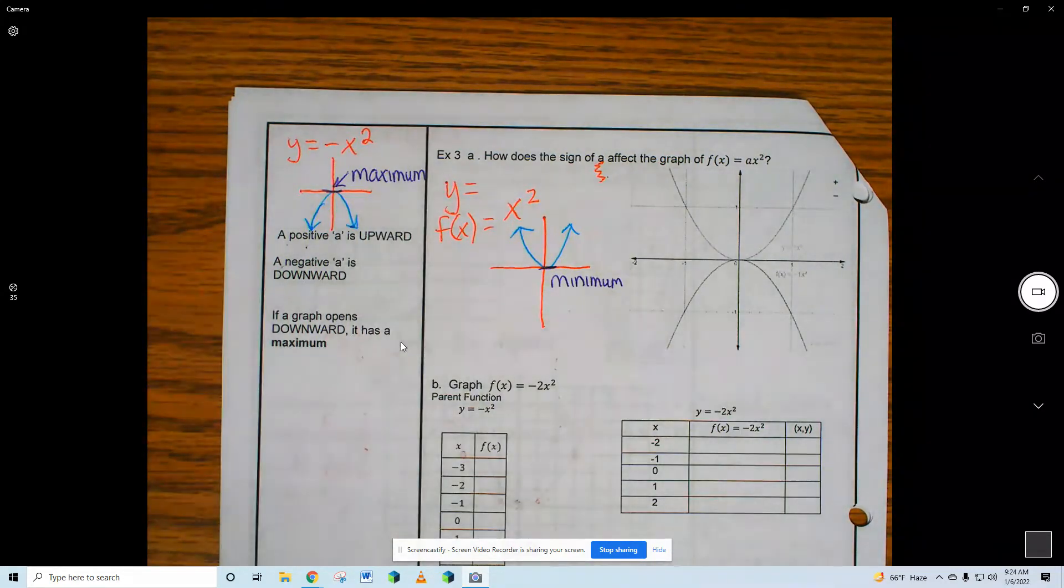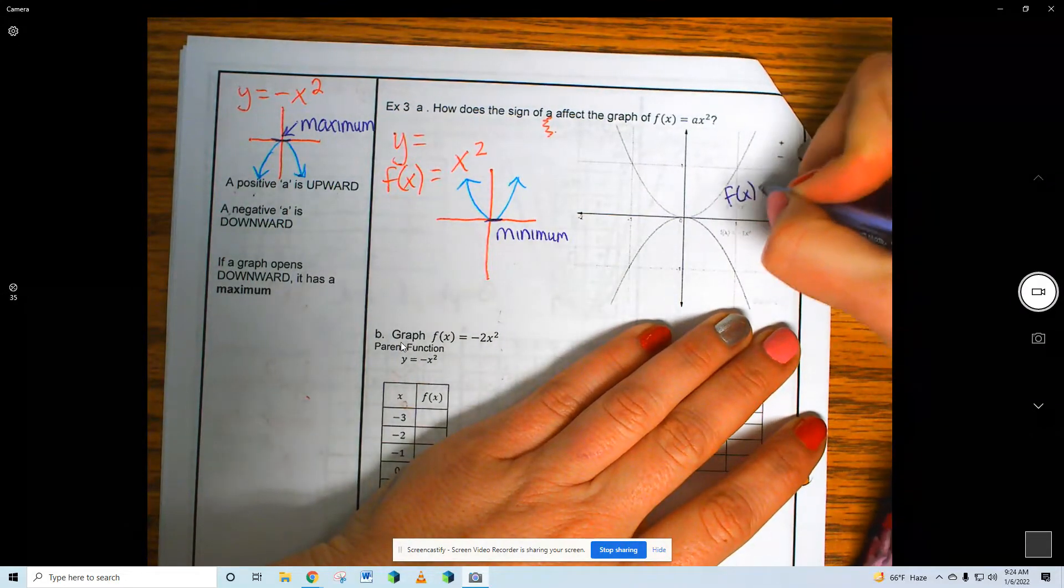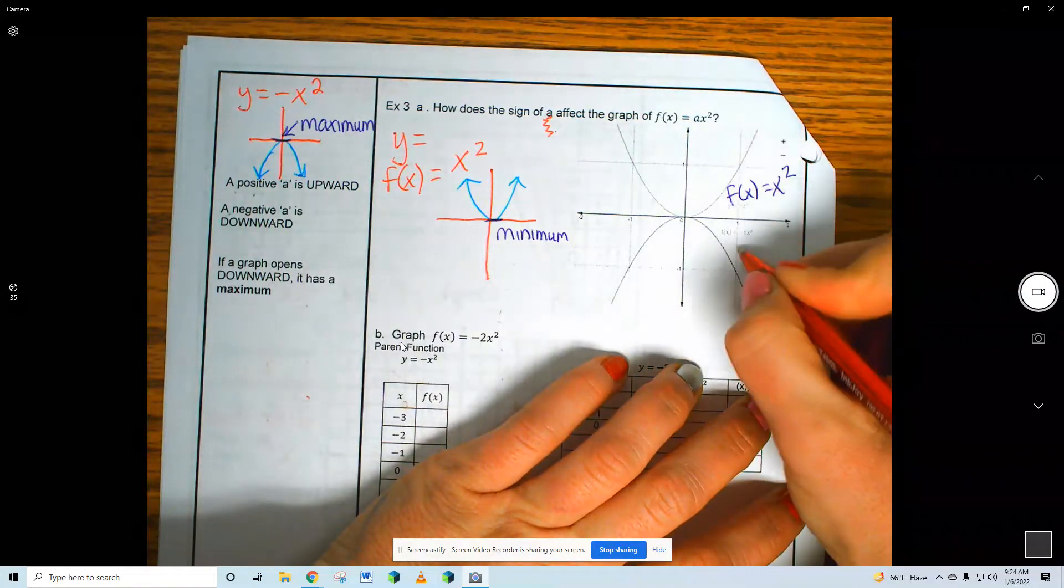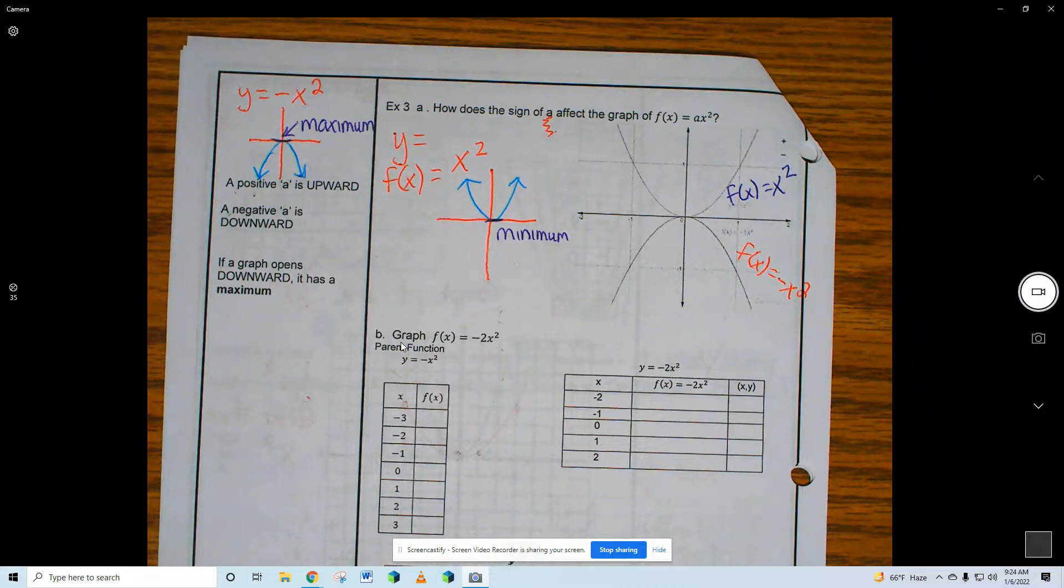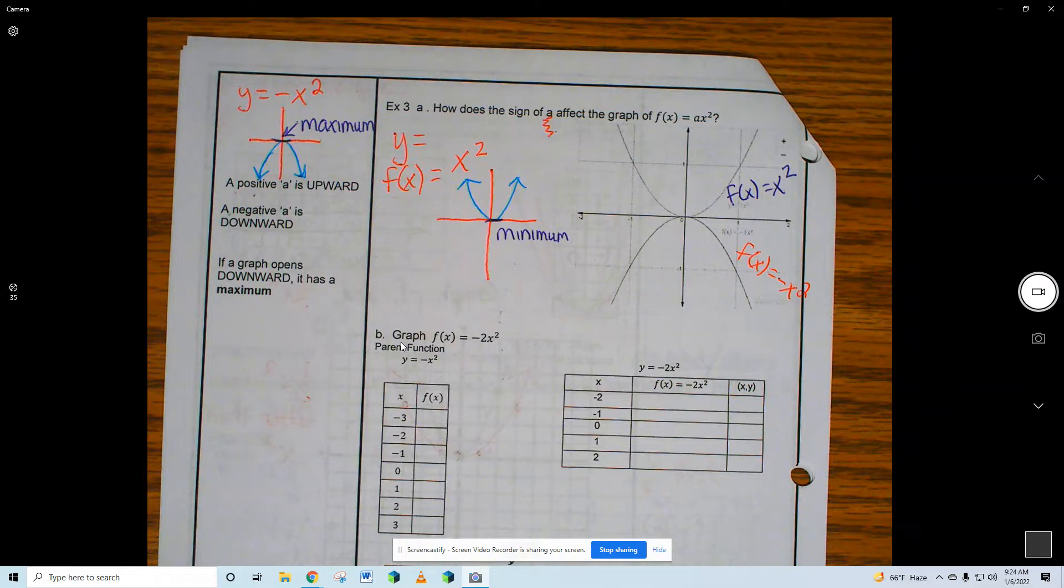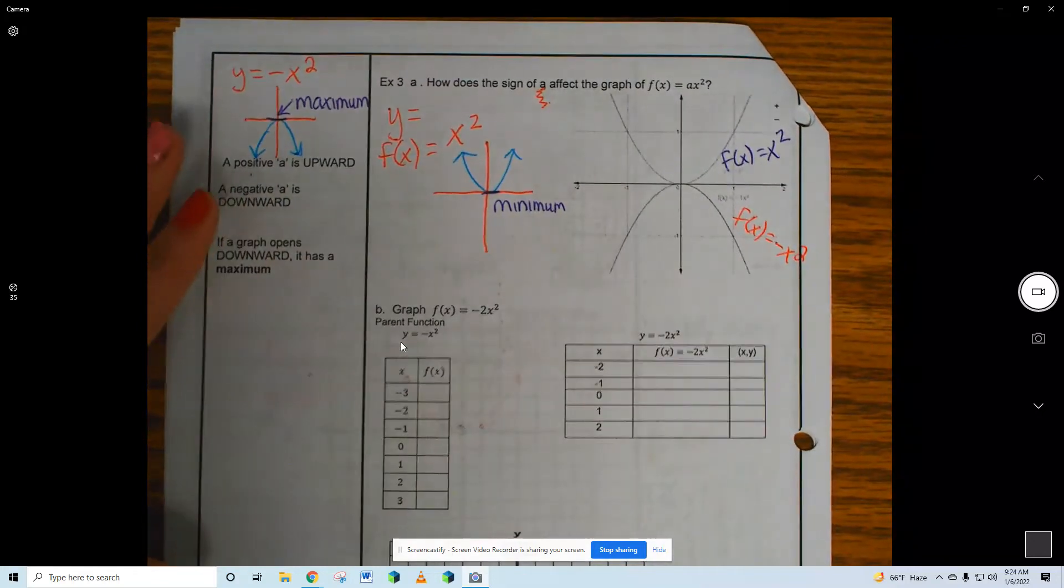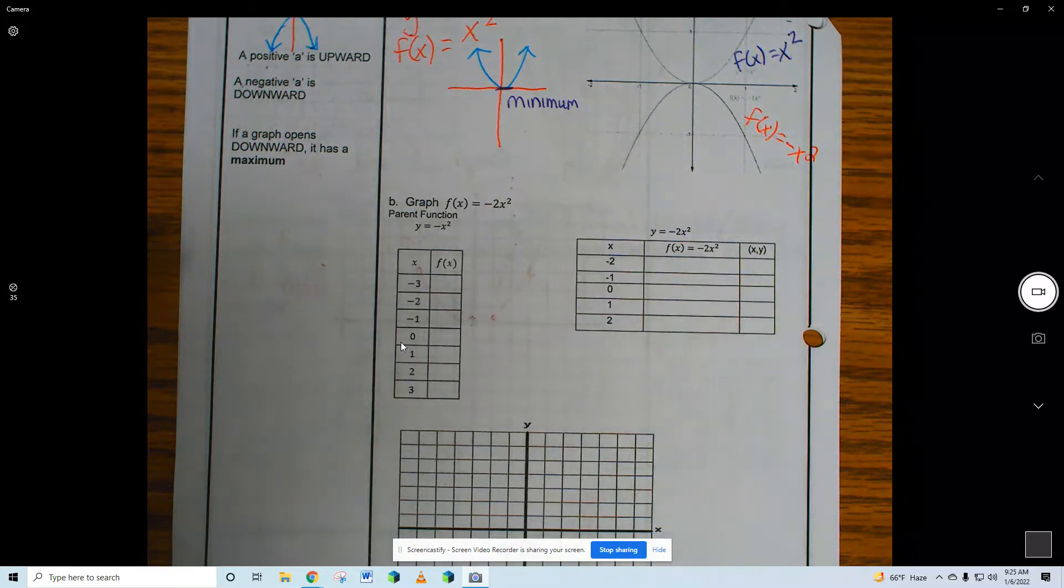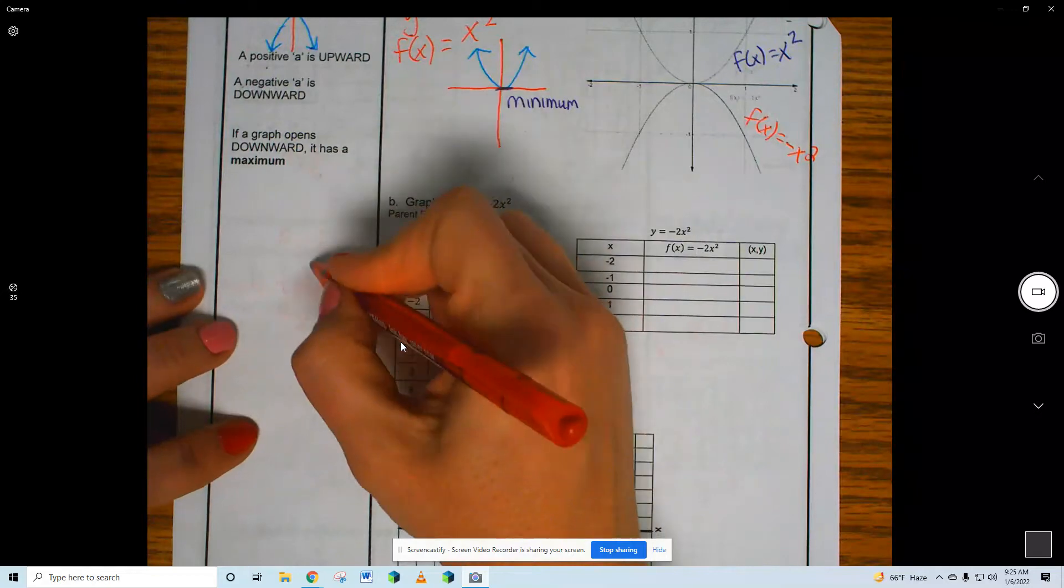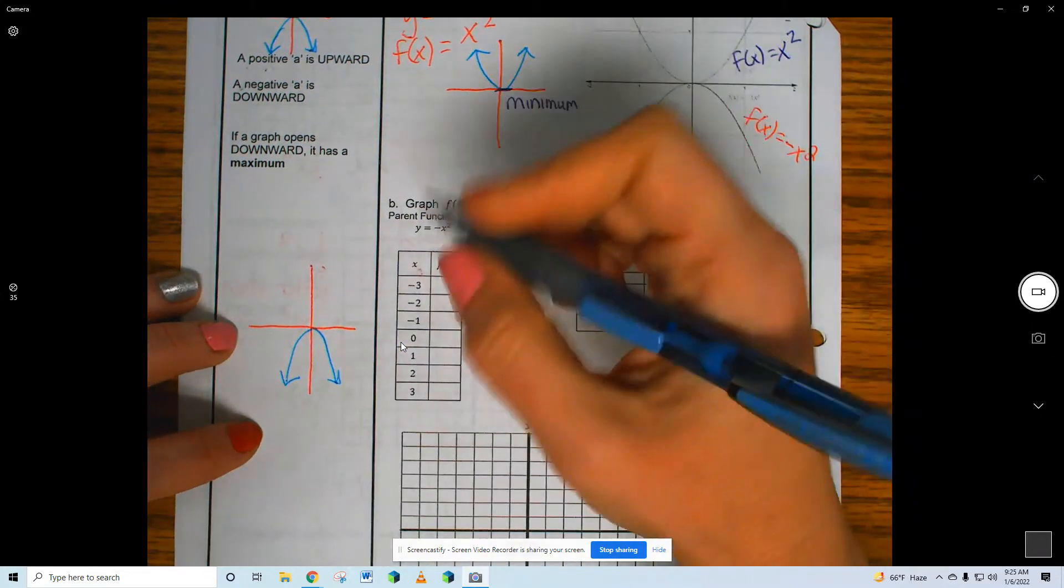So today what we're going to do is all the math is the same. We're still plotting tables of values. This top graph right here is F of X equals X squared. This bottom graph is F of X equals negative X squared. Okay. So now, let's do this. Graph F of X equals negative 2X squared. So my parent function of negative X squared. This one. It looks like this. So here's my parent function right here.